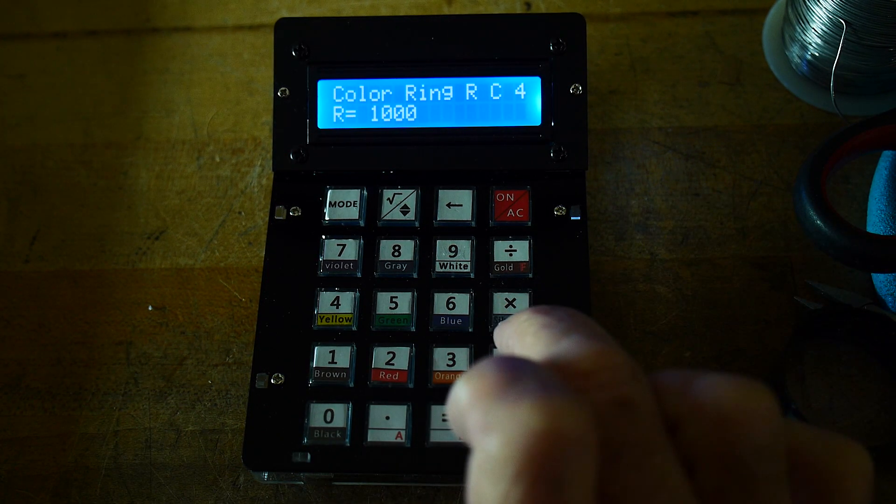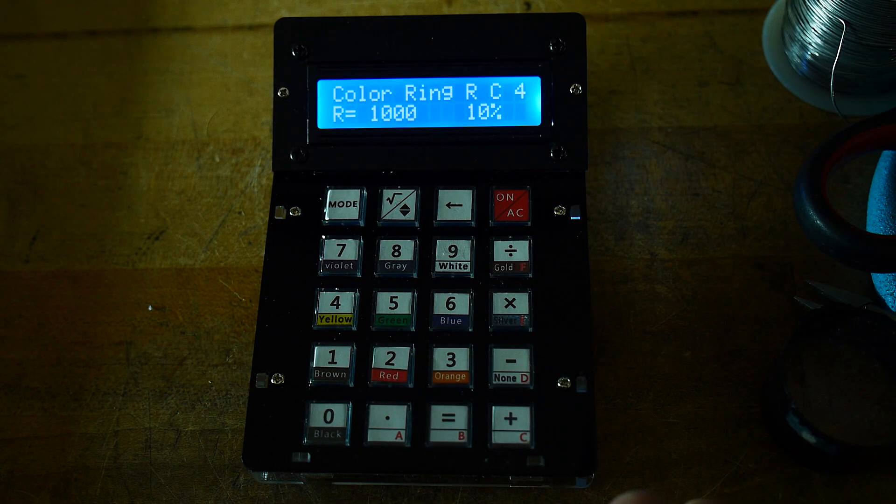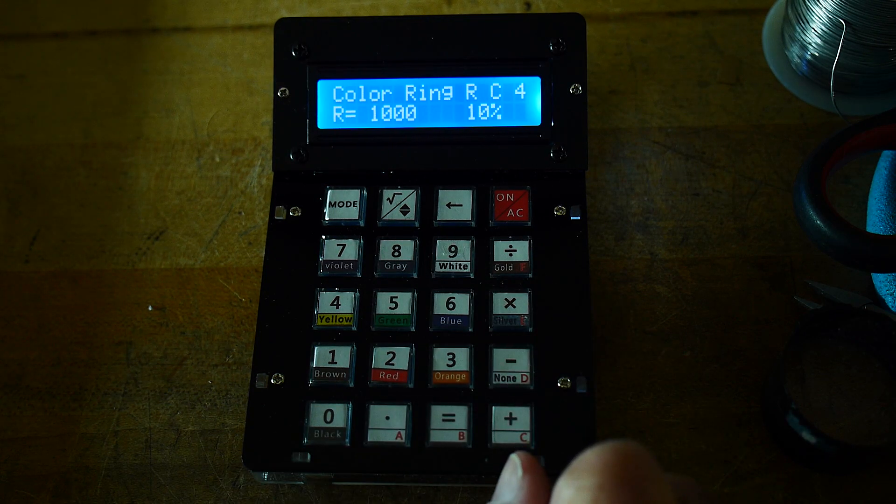And then if there's a color, let's say there's a silver band. You hit silver, and that means it's 10%. So that's pretty cool. If you don't remember the color codes.